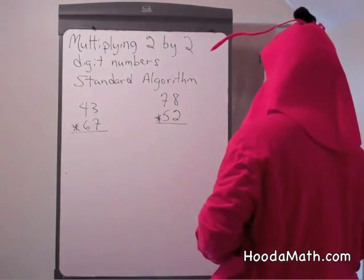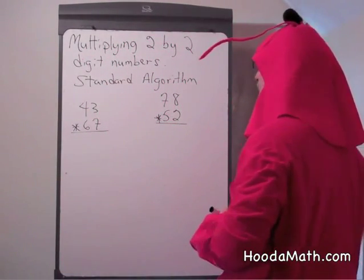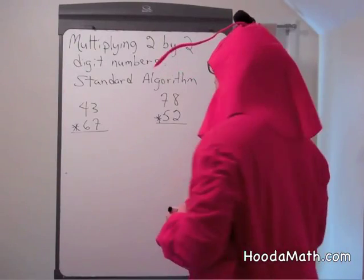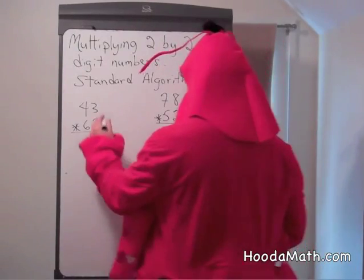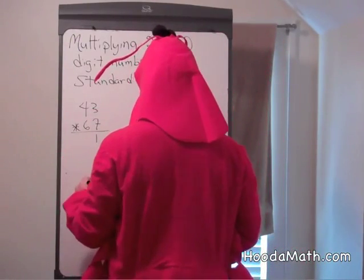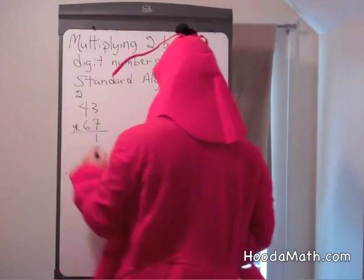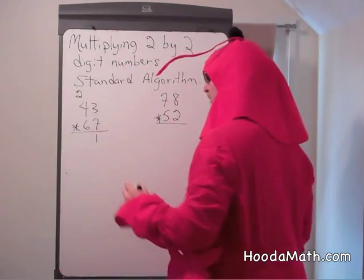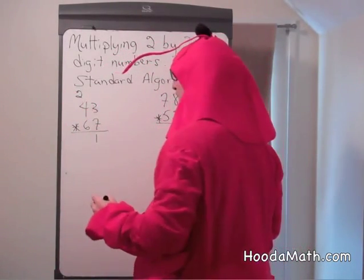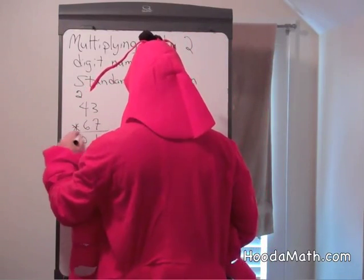Multiplying two-by-two-digit numbers using a standard algorithm. 7 times 3 is 21. Regroup — bring the 2 there. 7 times 4 is 28, plus 2 is 30.